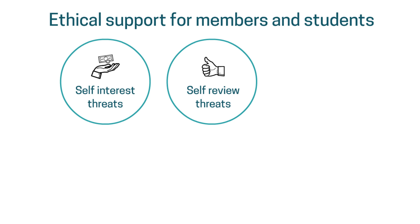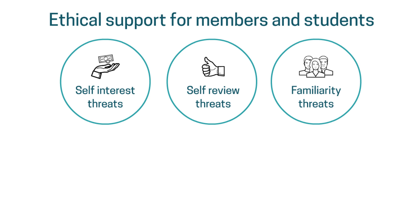As well as personal circumstances having an impact on professional judgment, there are also familiarity threats. These arise when the accountant is so sympathetic to the interests of someone like a family member or a close work colleague that their professional judgment is compromised. This could be a problem, for example, if a close colleague is a friend and you behave unethically by covering up a mistake in their work, perhaps in order to avoid them getting into any form of trouble.